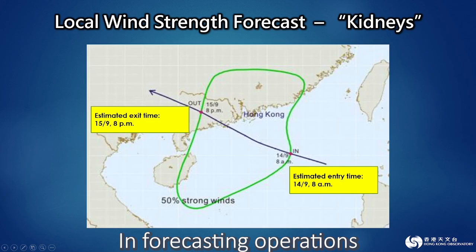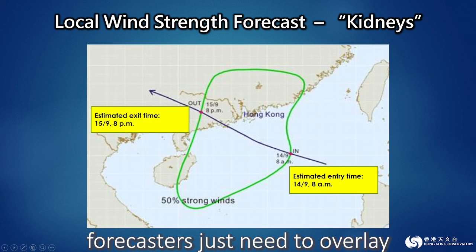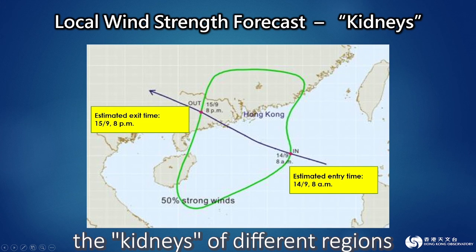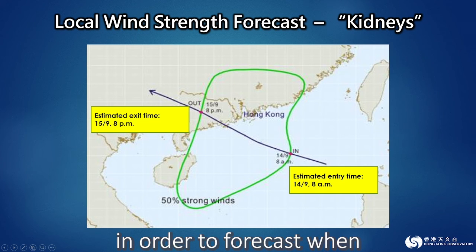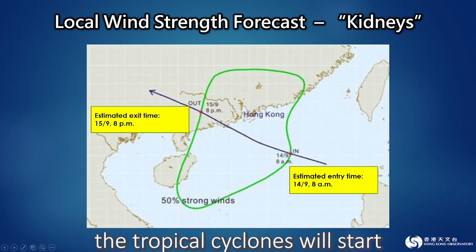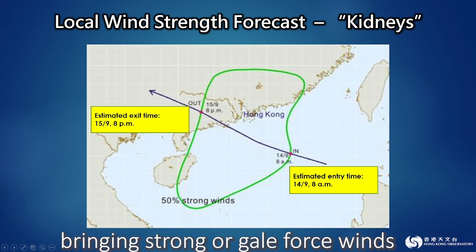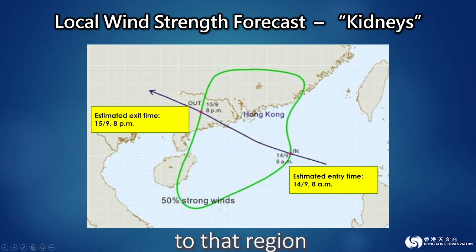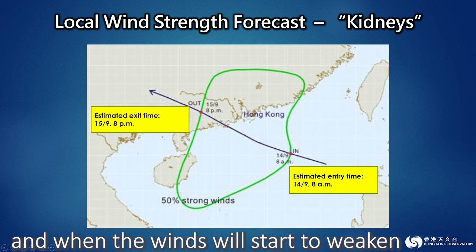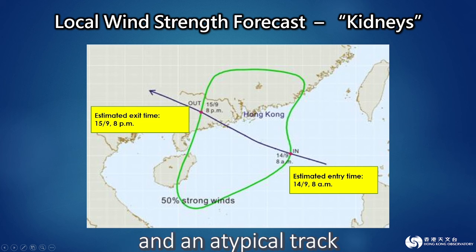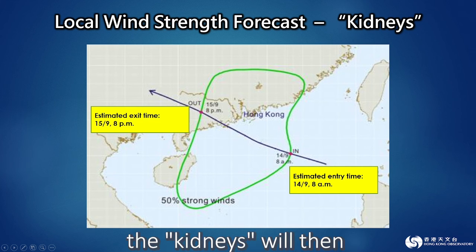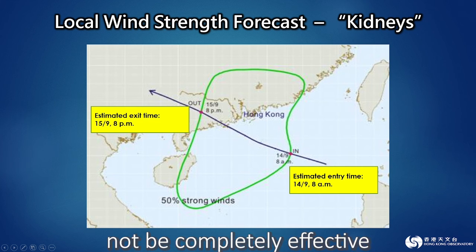In forecasting operations, forecasters just need to overlay the kidneys of different regions in Hong Kong on the tropical cyclone forecast track in order to forecast when the tropical cyclone will start bringing strong or gale force winds to that region and when the winds will start to weaken. Nevertheless, if the tropical cyclone has an asymmetrical structure and an atypical track, the kidneys will then not be completely effective.